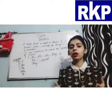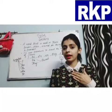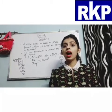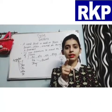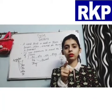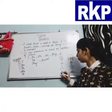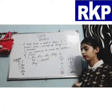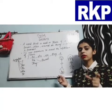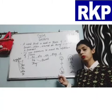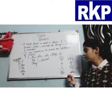The pronoun 'I' is used when I am talking about myself. When I am pointing to you, then the pronoun 'you' is used. If we have to specify a boy or a man, we will use the pronoun 'he'. For a girl or a woman, we will use the pronoun 'she'.